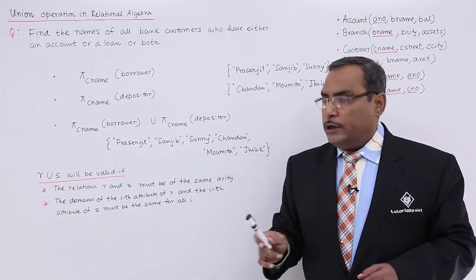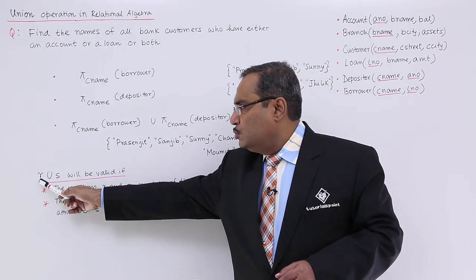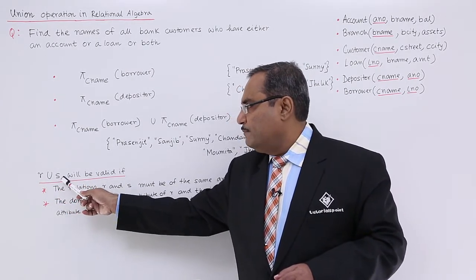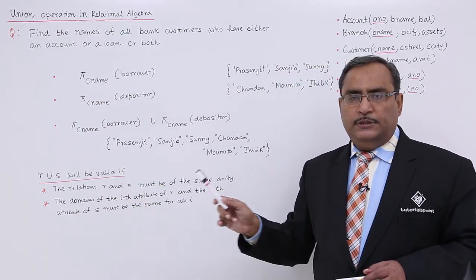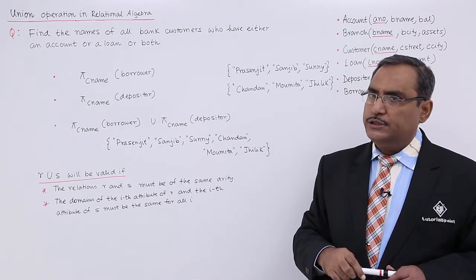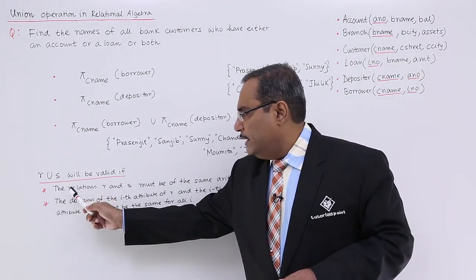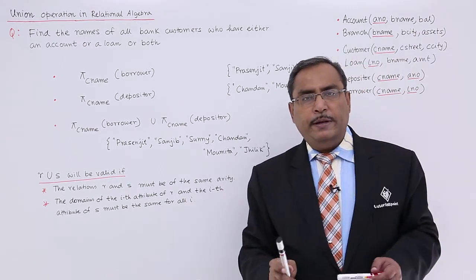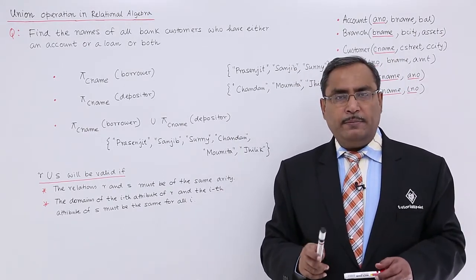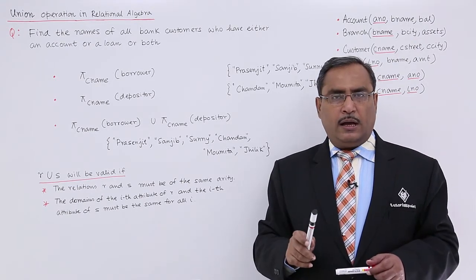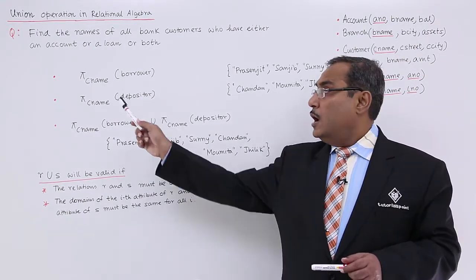But one point is very important. Let us suppose I want to do union between two relations R and S. So R union S will be valid if and only if we are having two conditions. First condition: the relations R and S must be of the same arity. What is the meaning of the term arity? Arity means number of attributes. That means R and S must be having the same number of attributes.